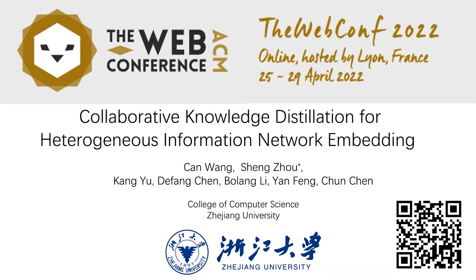First, I will introduce the background of this paper. The heterogeneous information network, also known as HIN, refers to the network with multiple types of nodes, attributes, or edges. Many networks in the real world scenario can be modeled as HIN, such as the social network and computer networks.